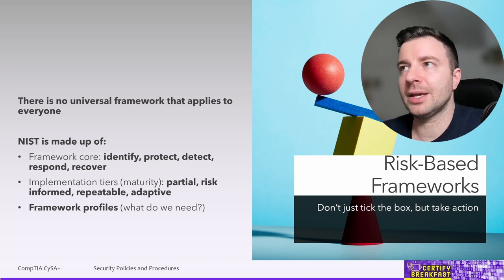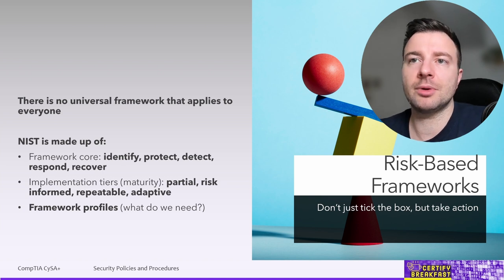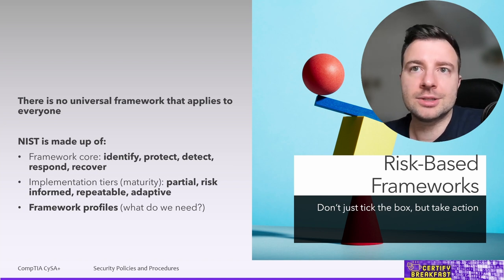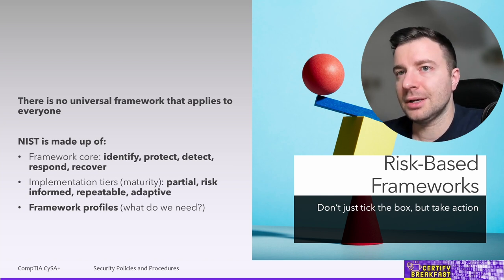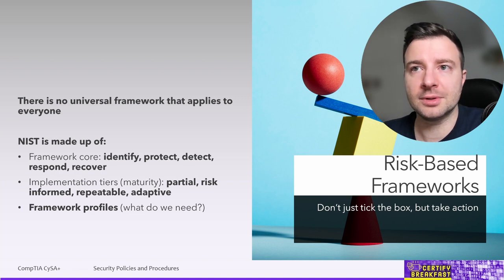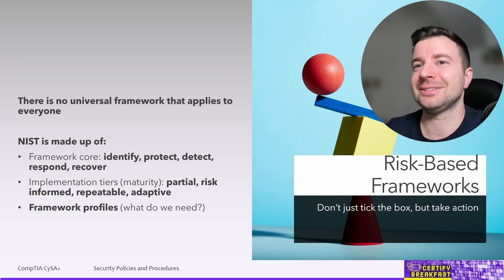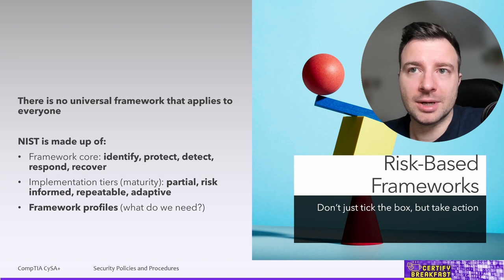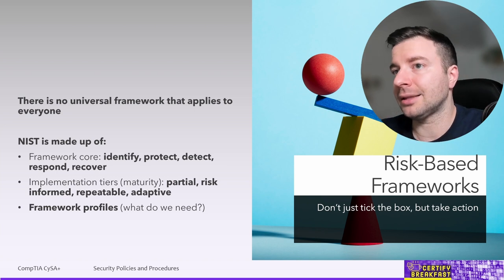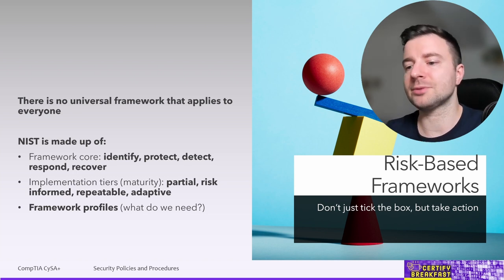Another component is the implementation, defined under a number of tiers — a maturity level. This describes how the core elements are integrated within the company's processes. We could be looking at something partially integrated, just getting started; or risk-informed, where we know about risks but haven't acted yet; then repeatable, where we know what we're doing and keep doing it but aren't thinking ahead; and finally adaptive, where we're continuously improving through a feedback loop from continuous monitoring.